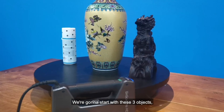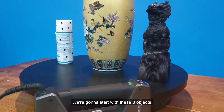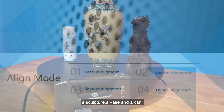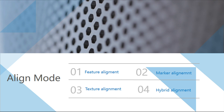So we're going to start with these three objects: a sculpture, a vase, and a can. And the alignment modes we are talking about here are features, markers, textures, and hybrid.